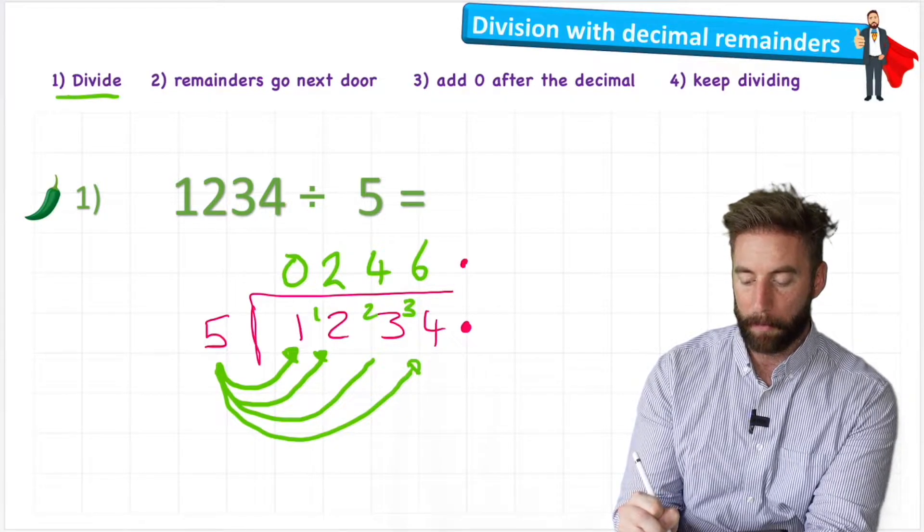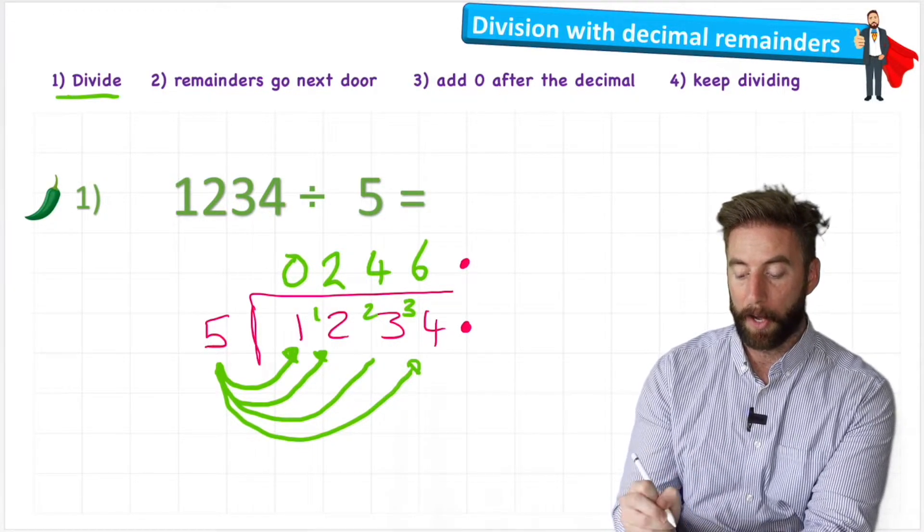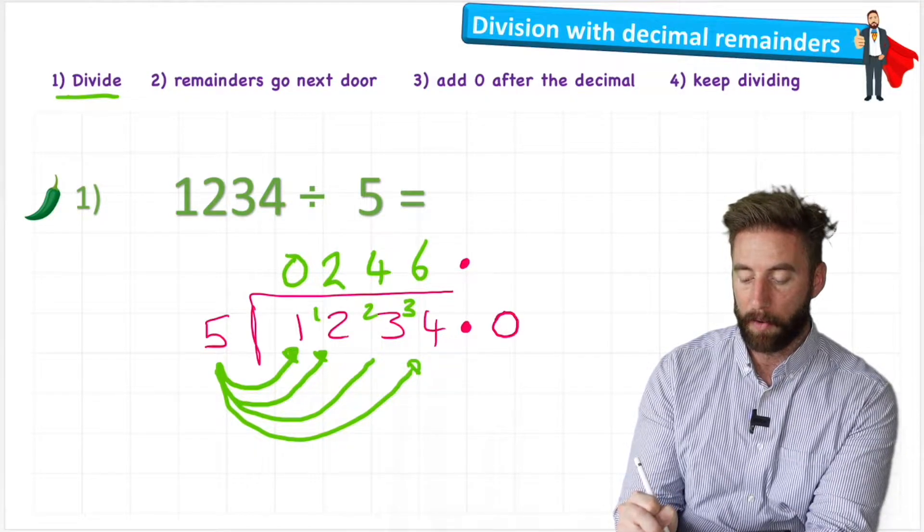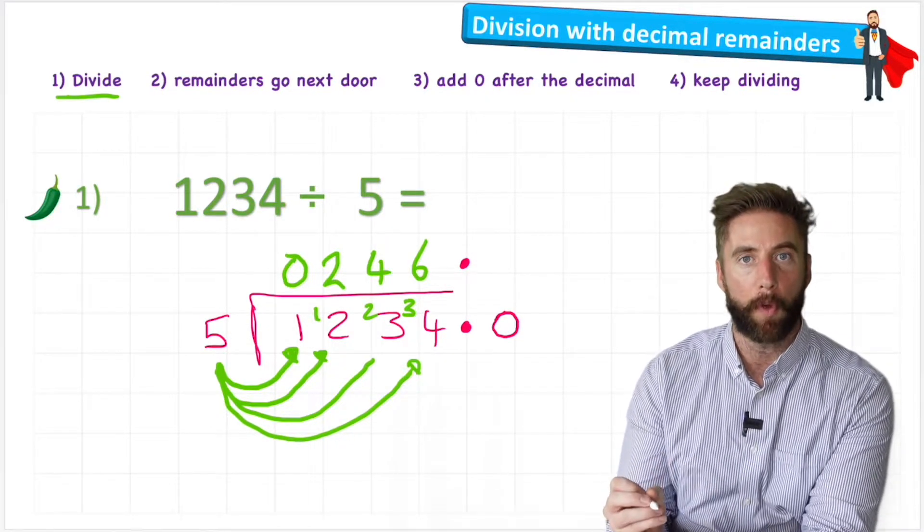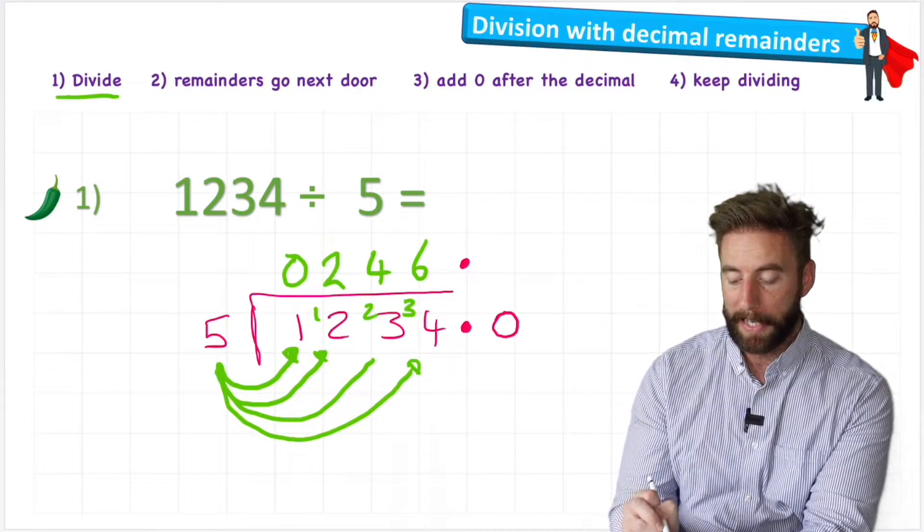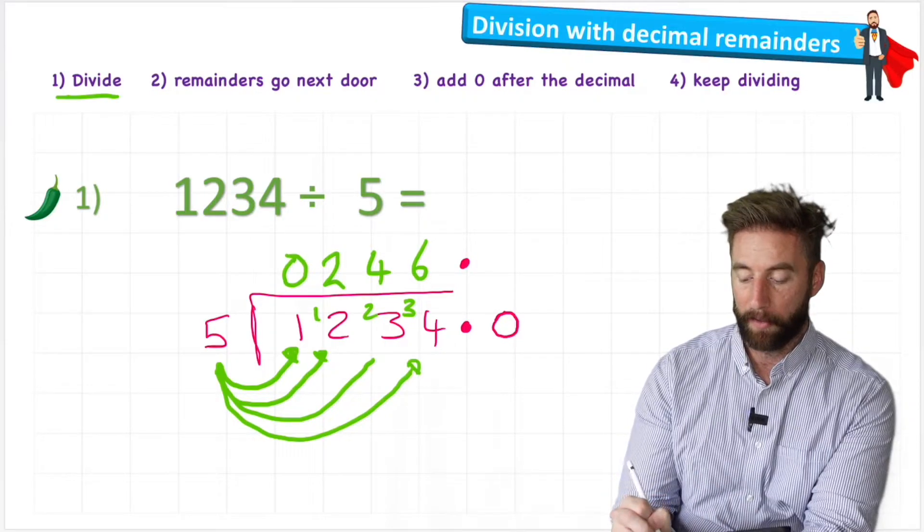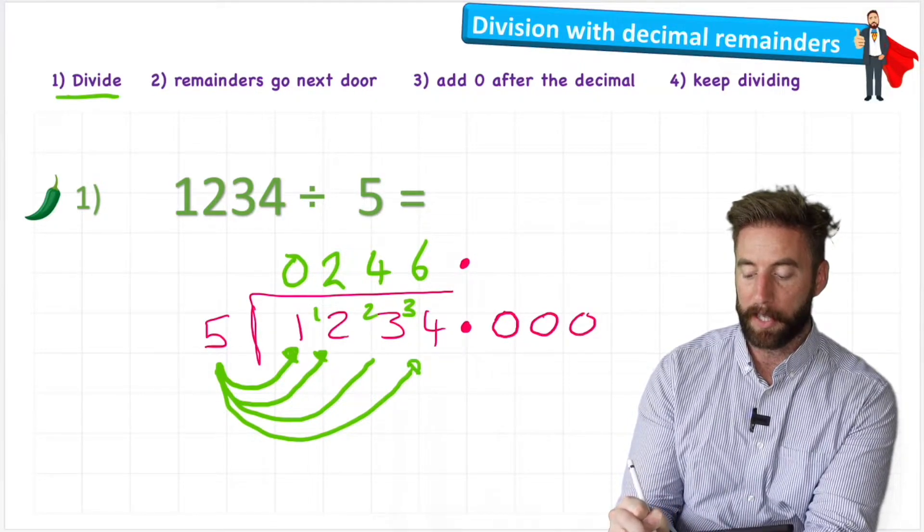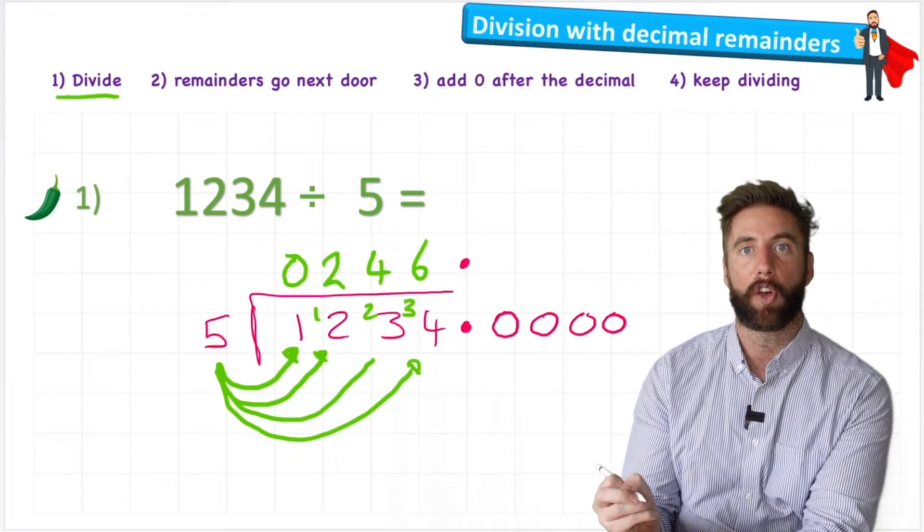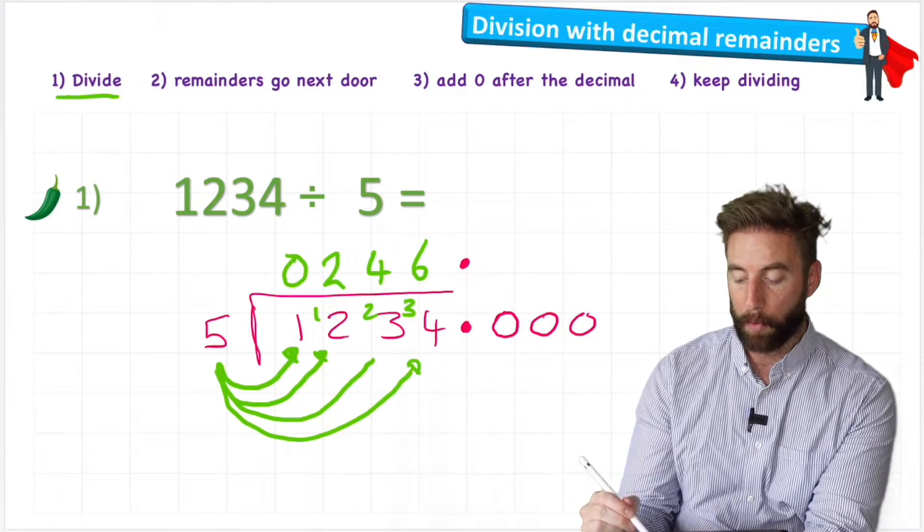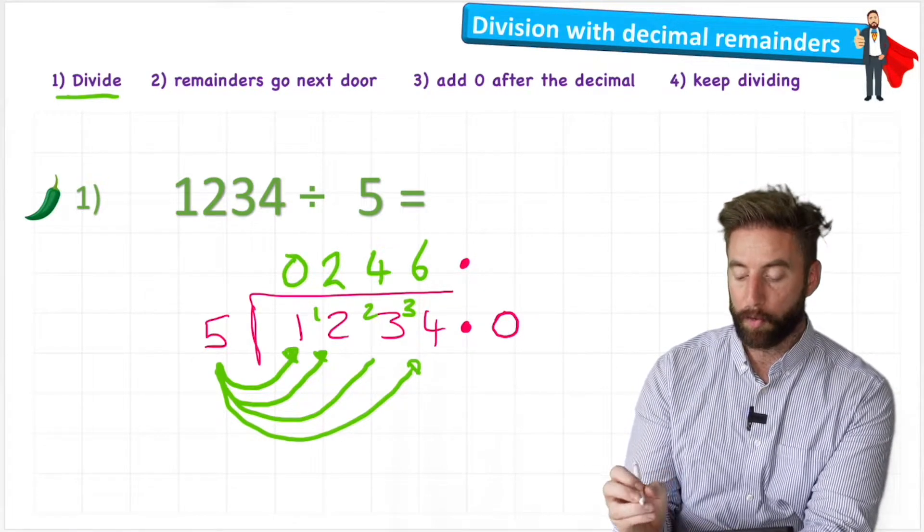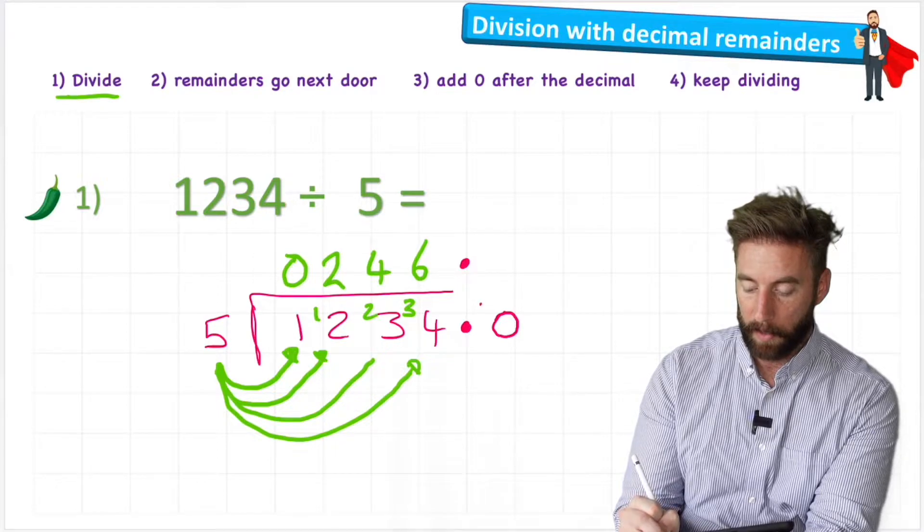So I can put my decimal in place on both lines. And here in my question, I can just add a zero after my decimal. And hopefully what we understand about place value of a number is that zero doesn't change the value of my number. I still have 1234. In fact, I could put unlimited zeros here, and it's still not going to change the number. But for now, we're just going to put one. And I'm simply going to put my remainder four in front of it.